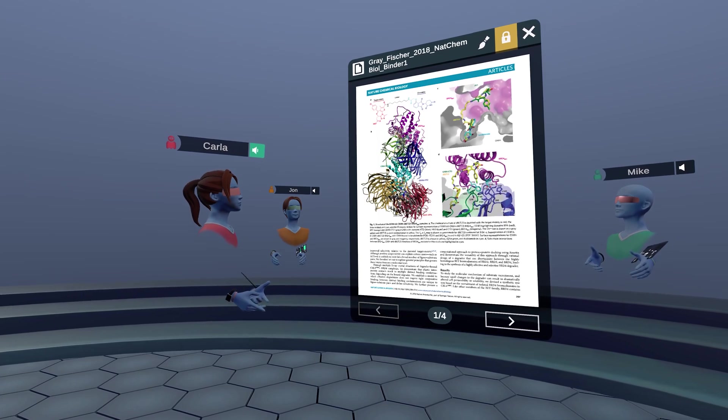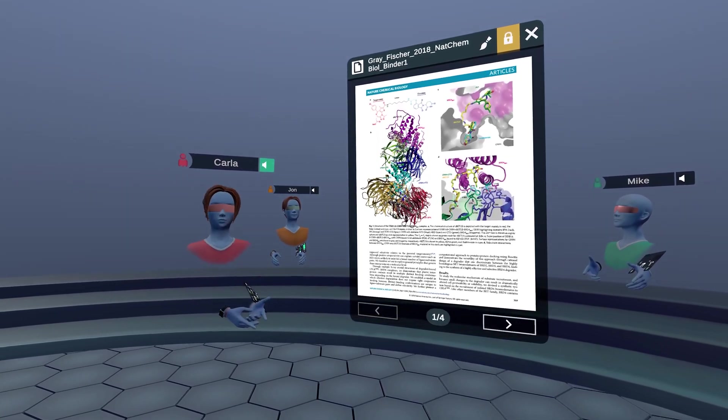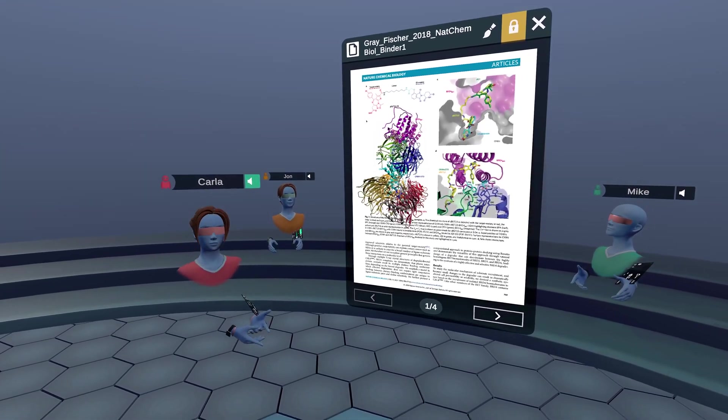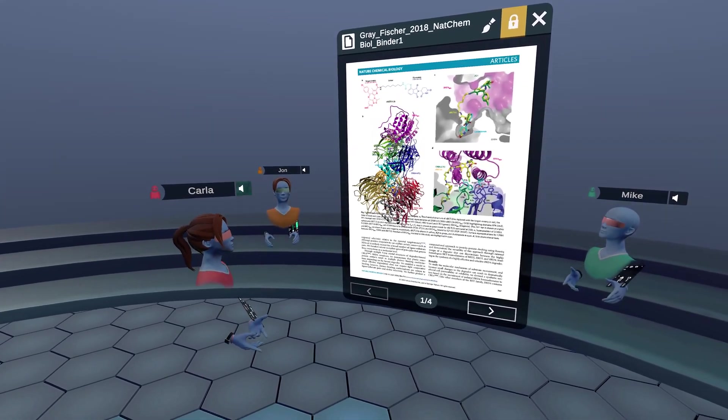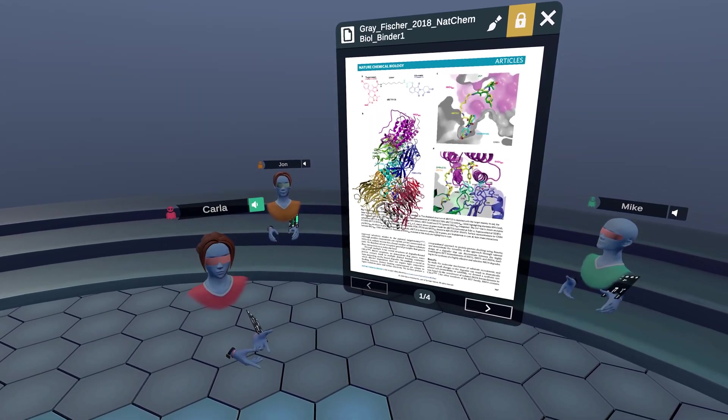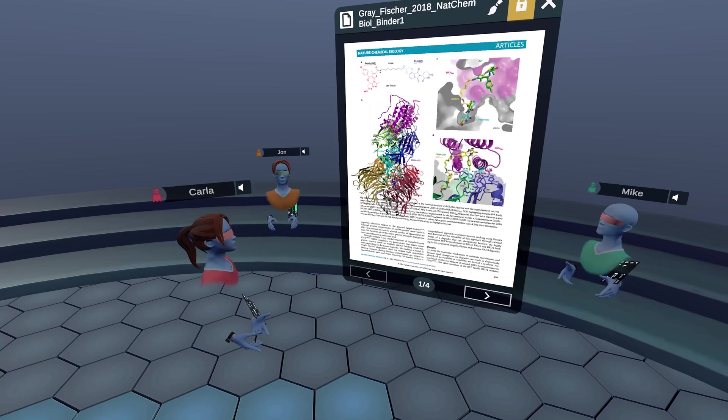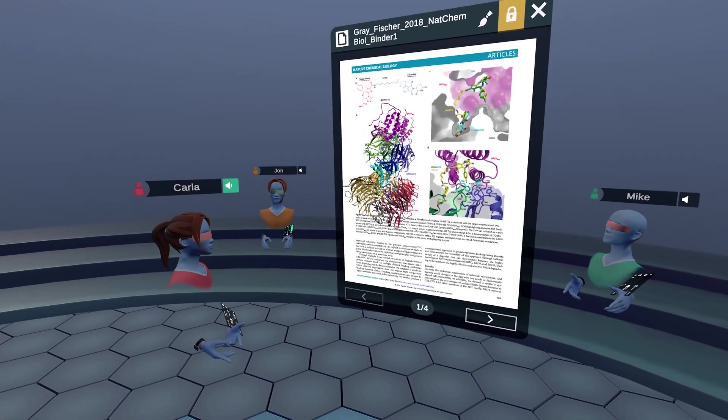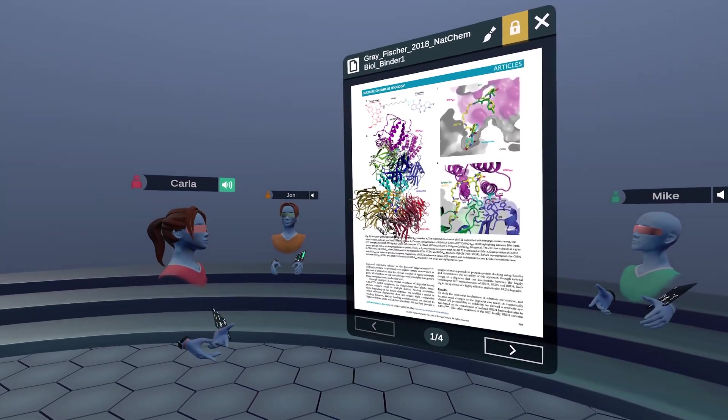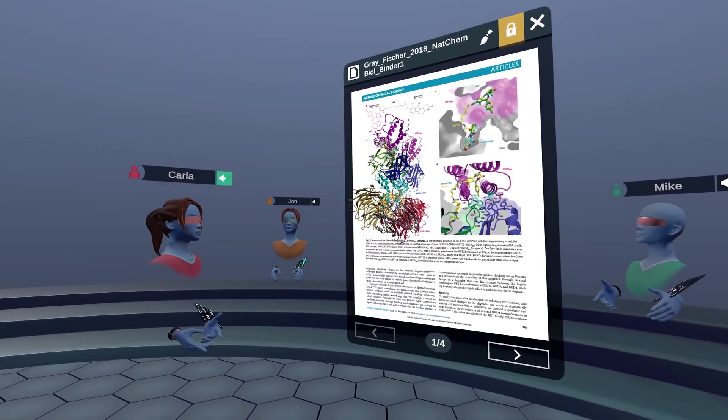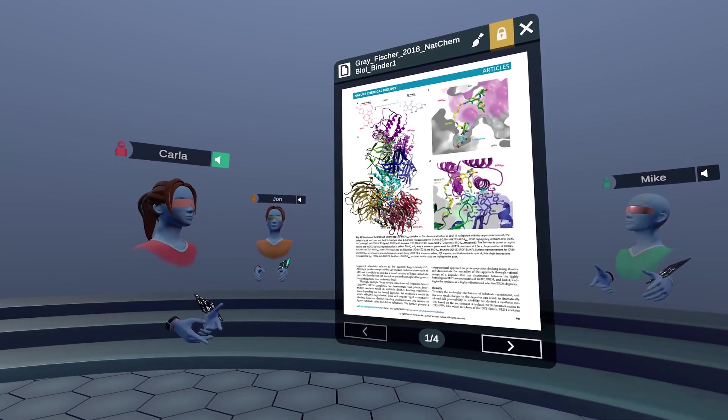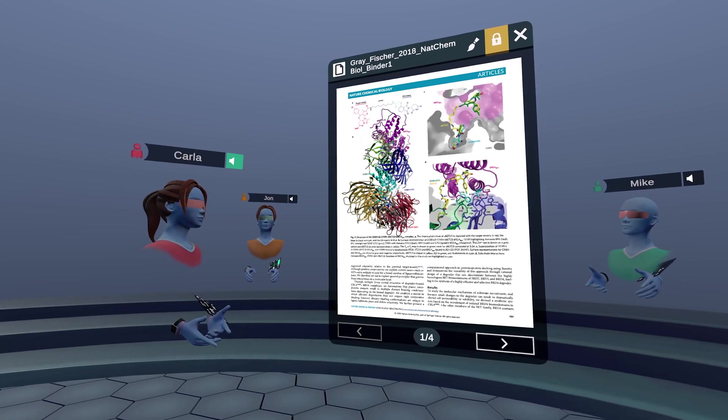They are implicated in particular in cancer and inflammation. And today in particular, we're going to be talking about the BET family of bromodomains, which consists of four members: BRD2, BRD3, BRD4, and BRDT. And today we'll be focusing on BRD4, which actually has two domains known as BD1 and BD2. And in this paper, they were trying to come up with some ligands selective in particular for the BD1 domain of those two.